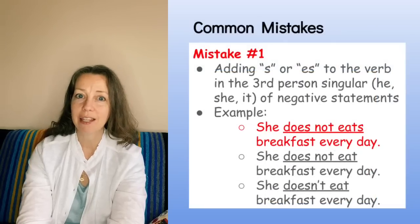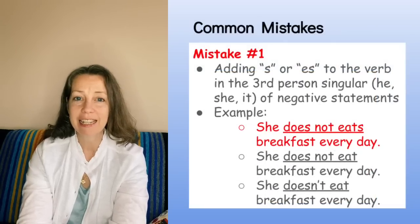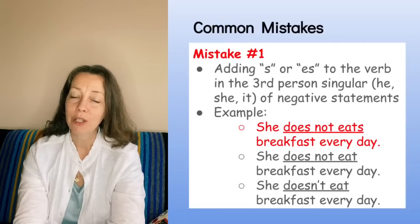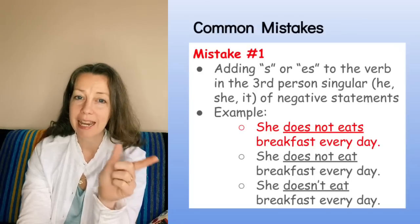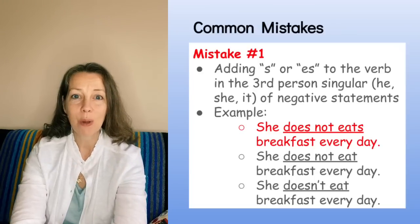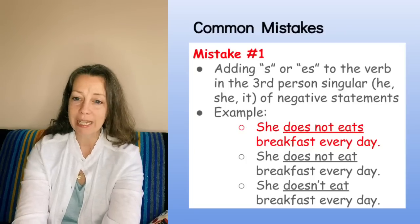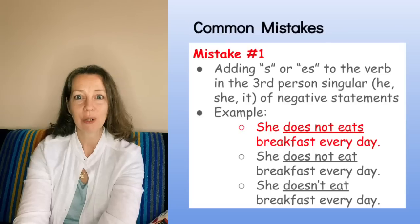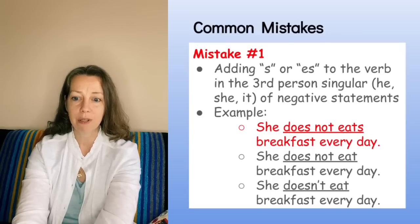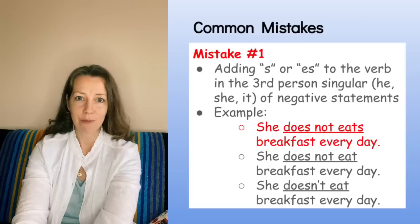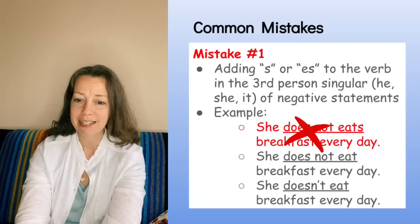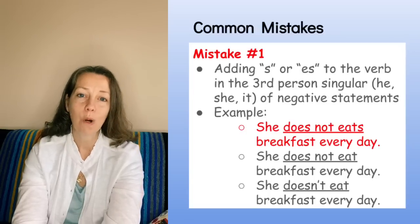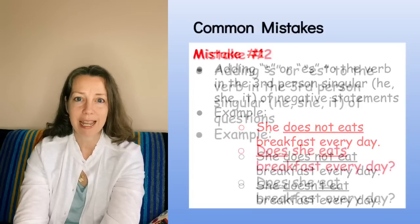Now we are going to look at mistakes in the simple present tense in negative statements and questions. Mistake number one deals with confusing the rules for affirmative and negative statements: adding S or ES to the base form of the verb in the third person singular of negative statements. For example, 'she does not eats breakfast every day' is incorrect. The correct form is 'she does not eat' or 'she doesn't eat breakfast every day.'